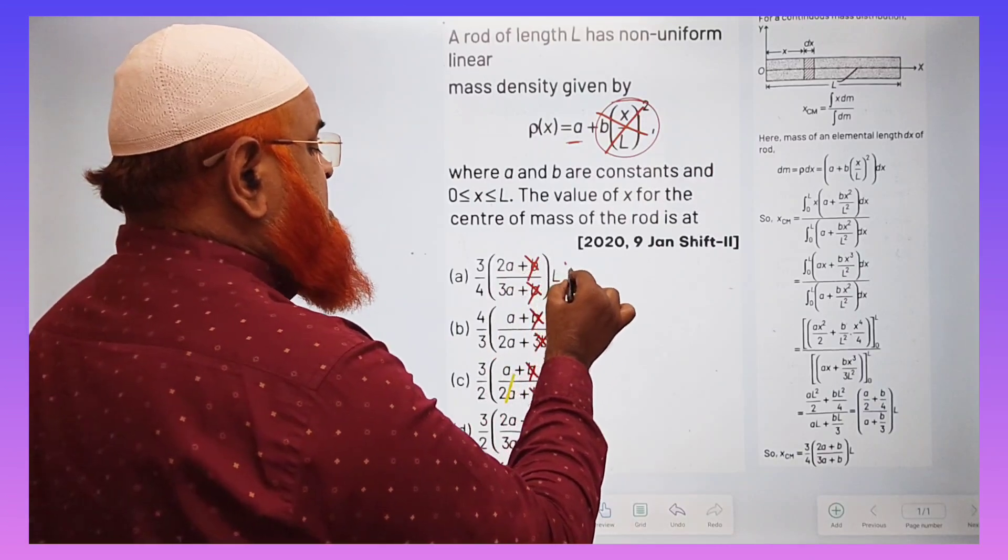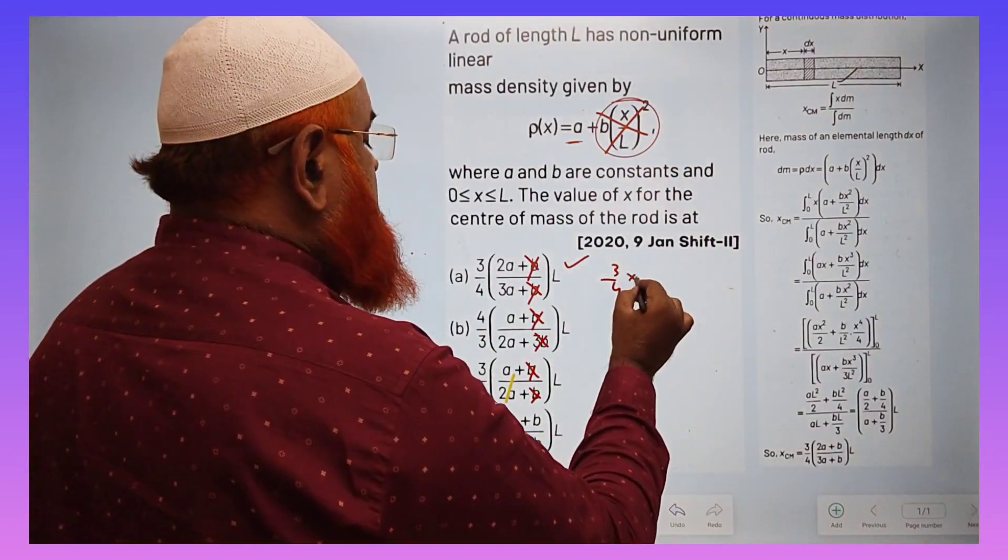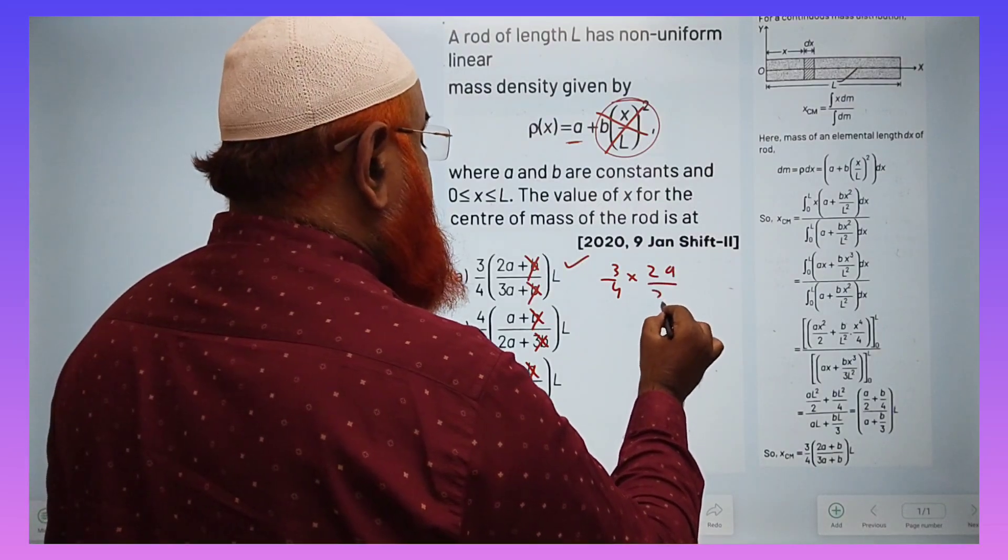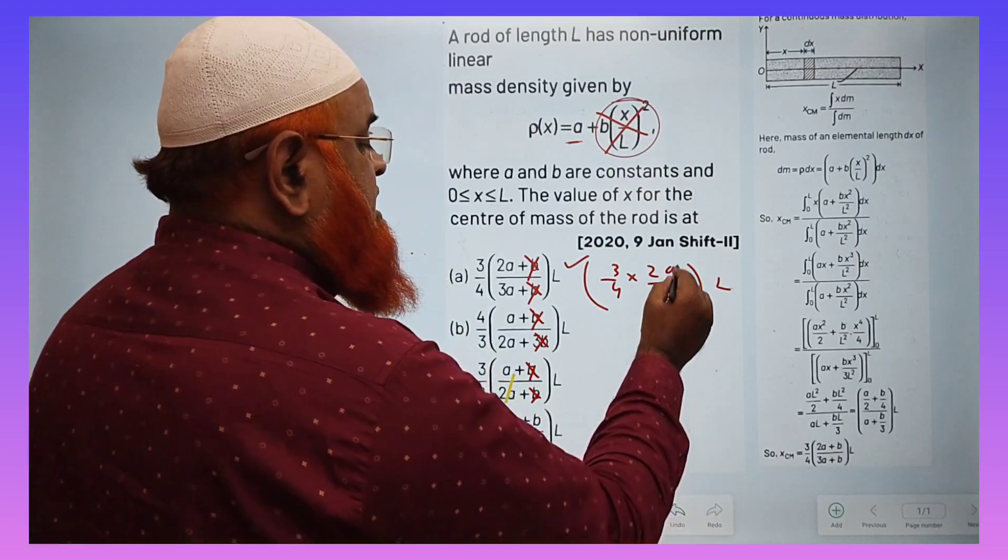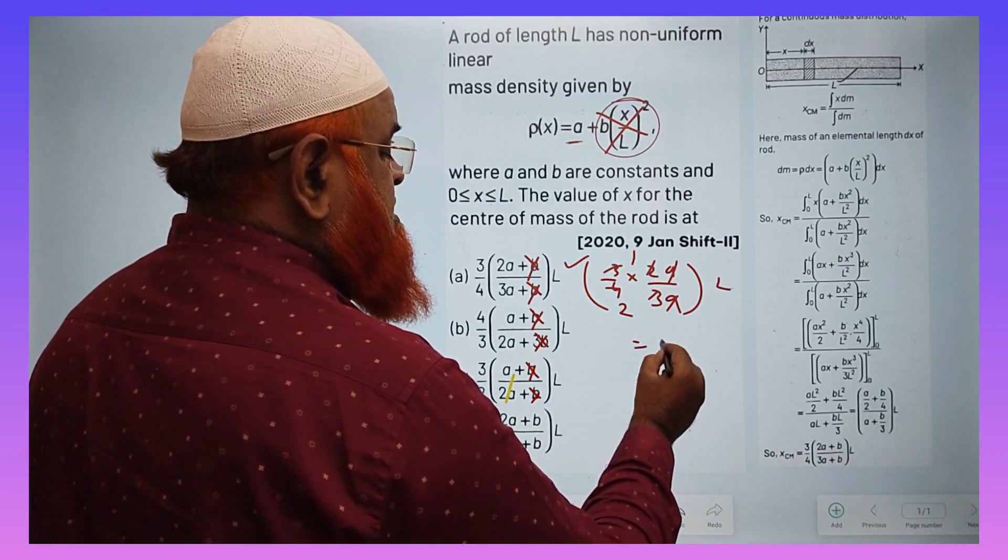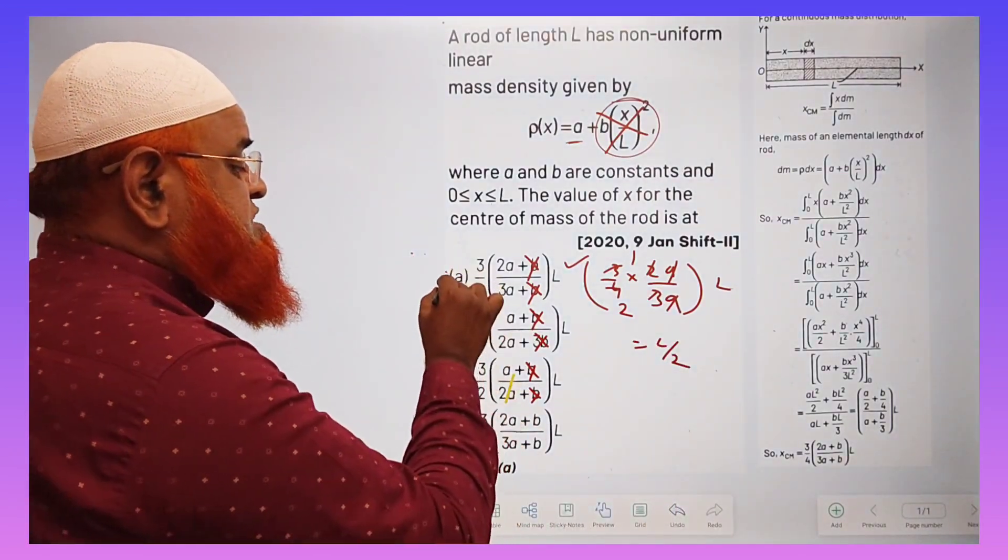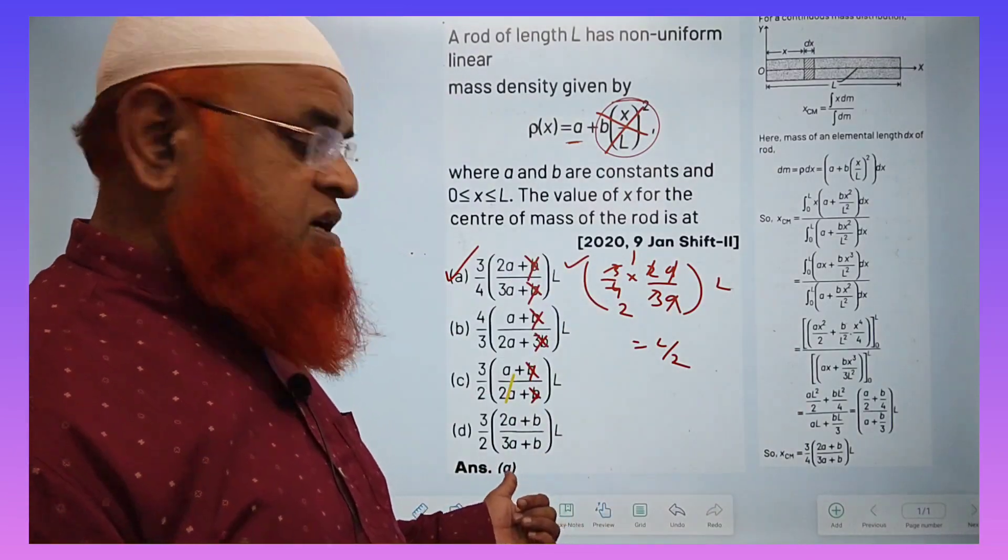First, in the first case, I have removed B. What is left? 3/4 times 2A/3A times L. The A's cancel, 2 and 2 cancel, 3 and 3 cancel. What is left? L by 2. So the first option is your correct answer.